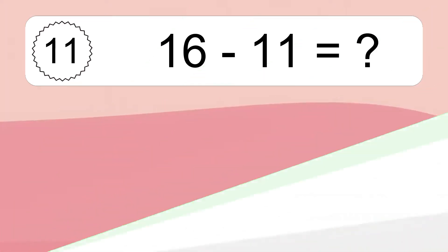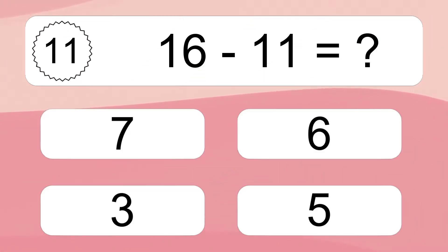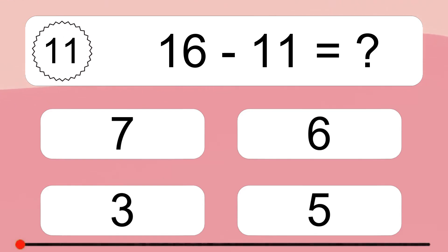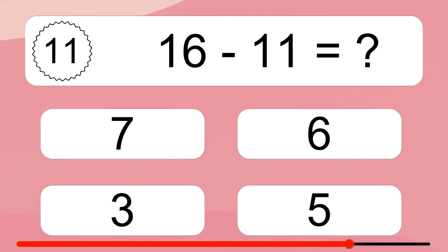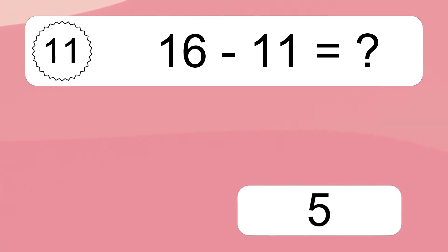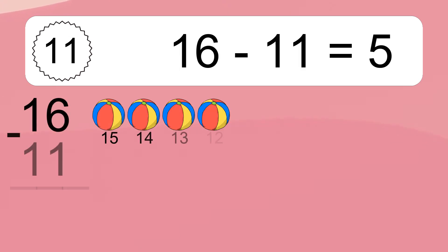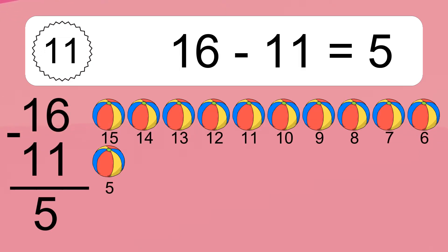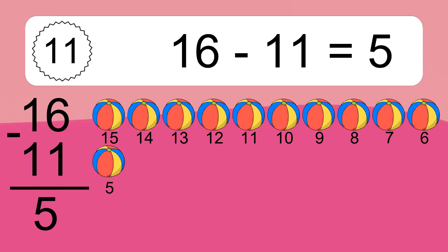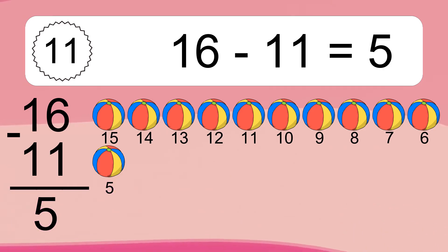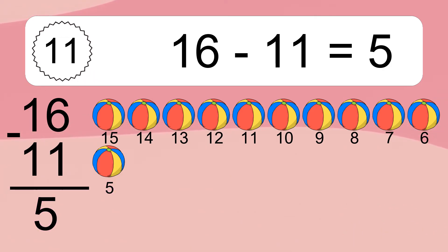16 minus 11 equals what? 16 minus 11 equals 5. Let's count it: 15, 14, 13, 12, 11, 10, 9, 8, 7, 6, 5.